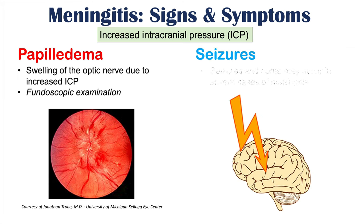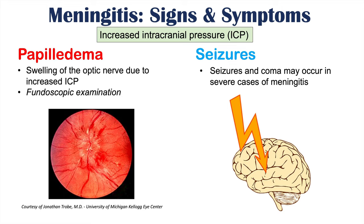Seizures can also occur when there is increased intracranial pressure, and seizures and coma may occur in severe cases of meningitis. If there is meningoencephalitis — when the brain is also inflamed along with the meninges — this can also occur in meningitis patients.